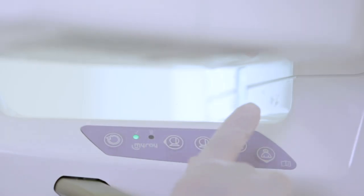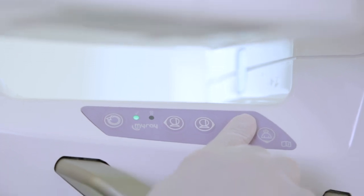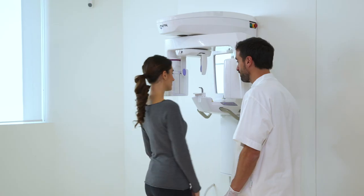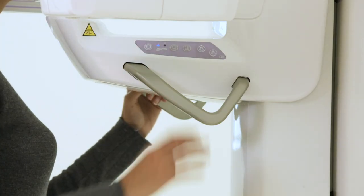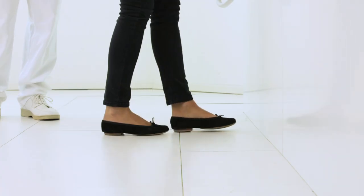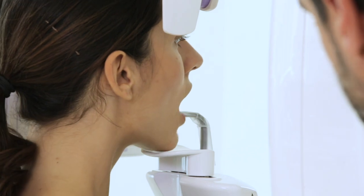The first operation adjusts the height of the device. This is done from an onboard keypad. Once the correct height has been reached, the patient grabs the handles and rests her chin on the chin rest.